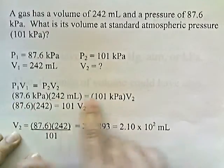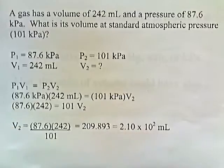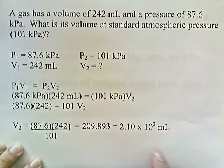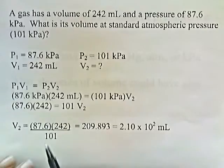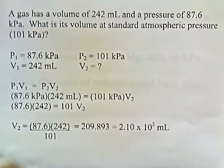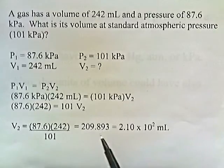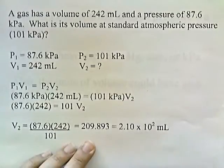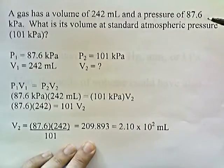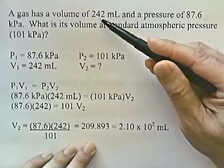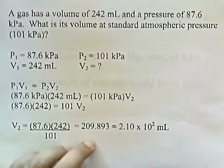I like to write the numbers with the units and then rewrite without the units to avoid confusion when solving. So: 87.6 times 242 equals 101 times V2. That means 87.6 times 242 divided by 101 kilopascals gives us V2. Solving this expression gives 209.893. In high school chemistry we round to three significant digits, so this is 2.10 times 10 to the 2 milliliters — approximately 210. Does this answer make sense? Boyle's Law says that when pressure increases, the gas shrinks. It started at 242, pressure increased, and we predicted a volume less than 242. And 210 is less than 242, so the answer makes sense.